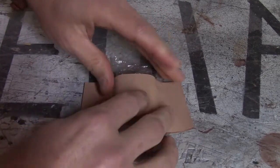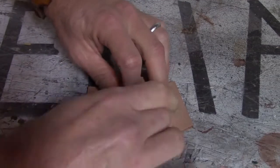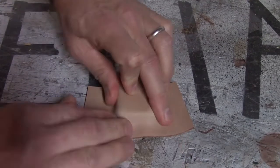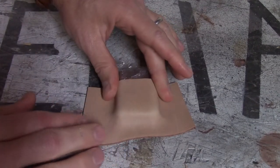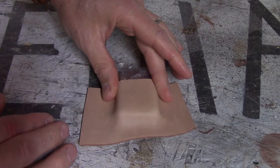Then just start working the edges. Be careful not to leave any fingernail marks as they will be very difficult to get out on your finished project. There we go. The wet molding is complete. Now we just let it dry.